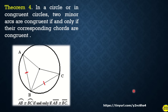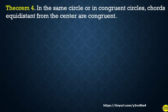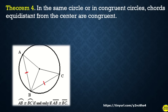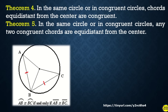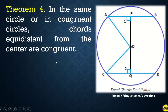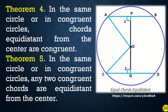For theorem number four: in the same circle or in congruent circles, any two congruent chords are equidistant from the center. For theorem number five: in the same circle or in congruent circles, any two congruent chords are equidistant from the center, as seen in the figure.